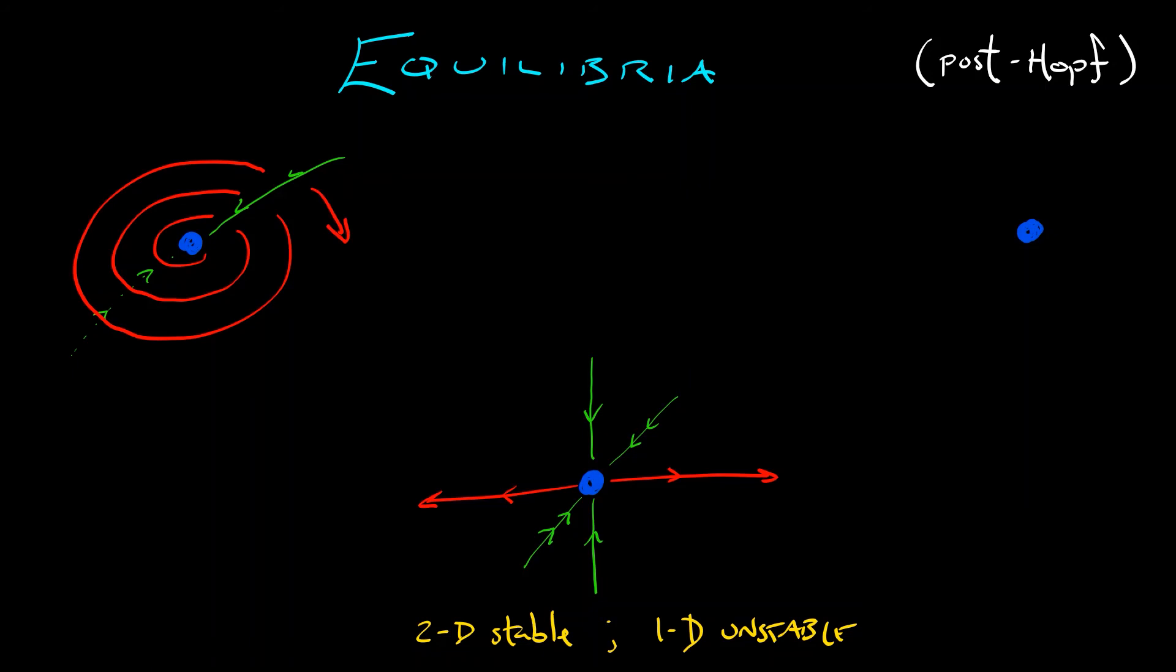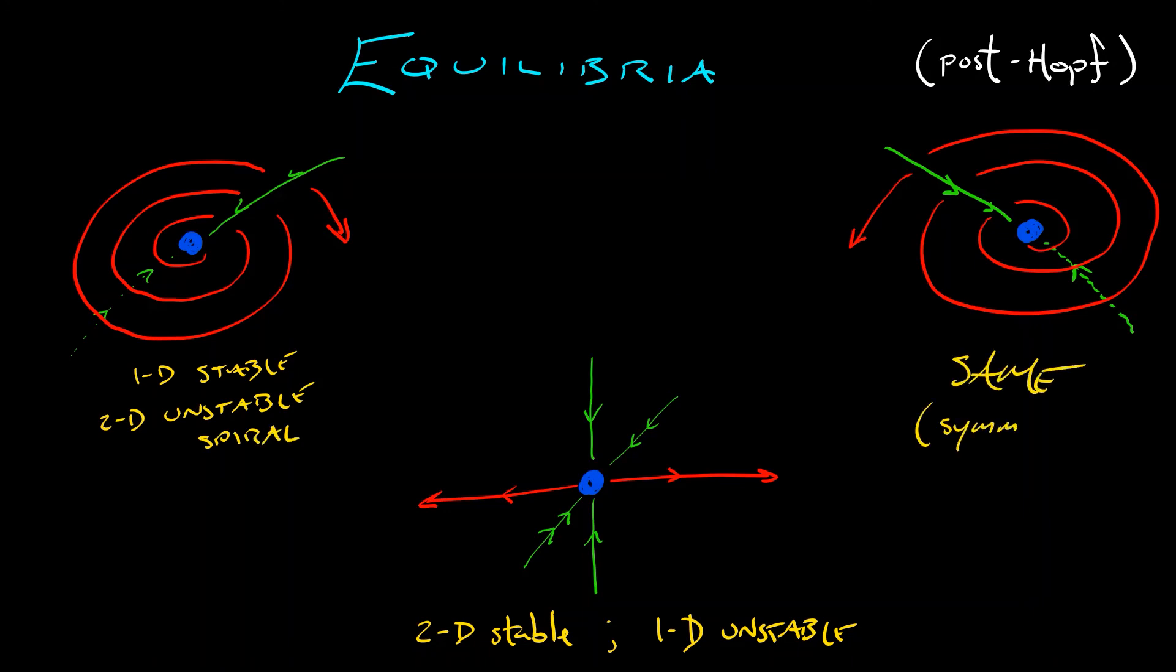Now, on the right, we have exactly the same thing. This system is perfectly symmetric. That's why the Hopf bifurcations are happening at the same place at both equilibria. Okay, this is what things look like locally. This is a local picture, but we need to go from local to global. And global? That's not so easy.